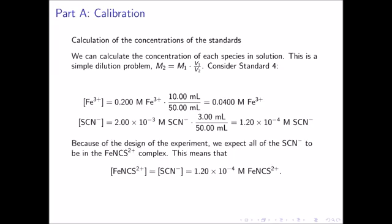Recall from the previous lecture that we designed the experiment such that by having an excess of ferric ion, we force all of the thiocyanate into the complex. This means that for standard 4, the concentration of the ferric thiocyanate complex is equal to the initial thiocyanate concentration, which is 1.20 times 10 to the negative 4 molar. In your report, you will show these three steps for standard 3.